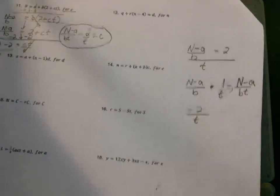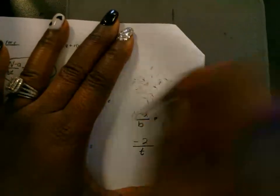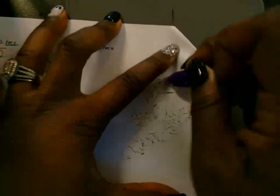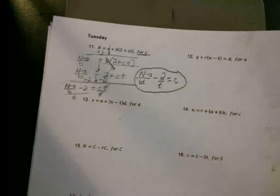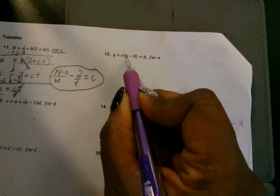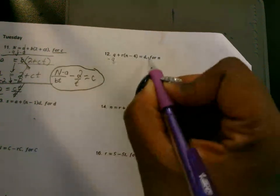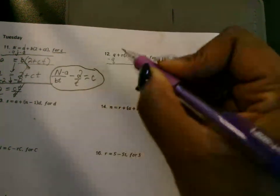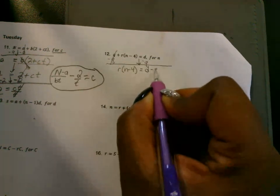Let's do another one — one that's a little different with multiple steps. Let's do number 13. We're solving for N. N is in this parenthesis, so let's do this one. I've got to get N by itself. Get rid of anything you can add or subtract first. This is in the parenthesis — you can't really mess with that until you get rid of this Q first. So let's subtract Q. When I subtract Q, Q is gone from over here and you're left with R parenthesis N minus 4. Bring down the equal — you've got D minus Q now.